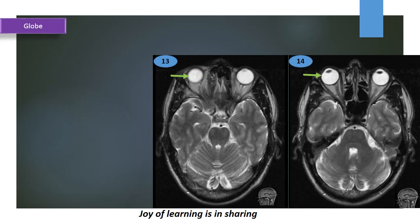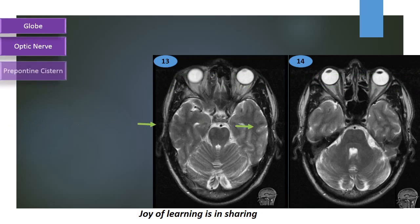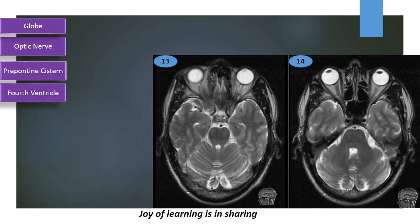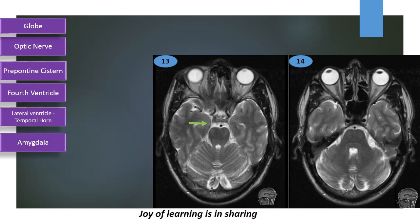Optic globe, optic nerve, prepontine system, fourth ventricle, lateral ventricle with its temporal horn, amygdala, hippocampus.